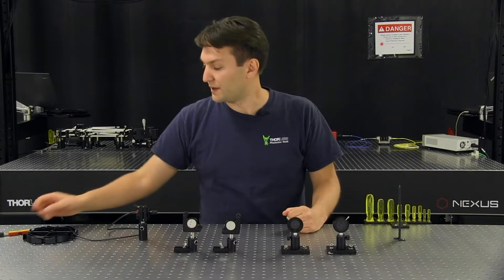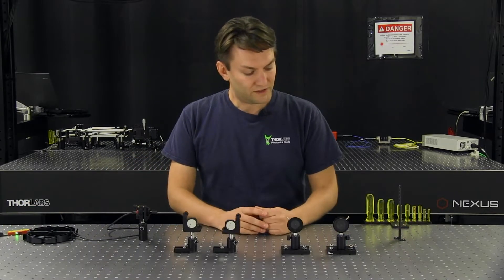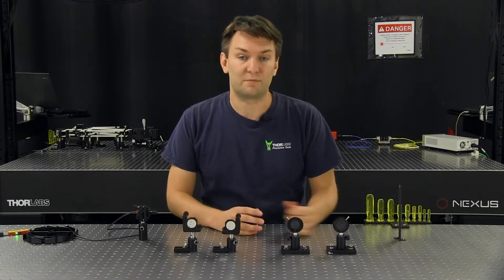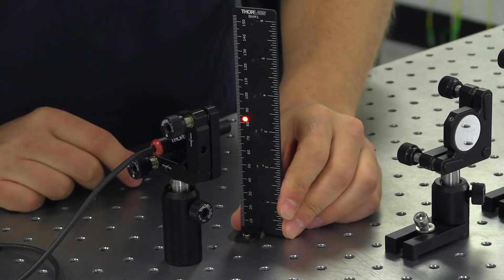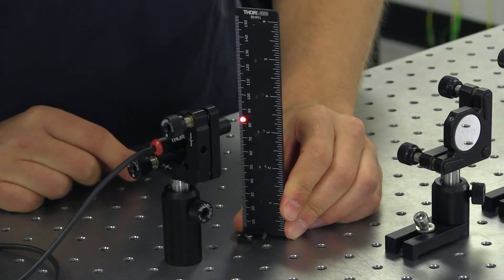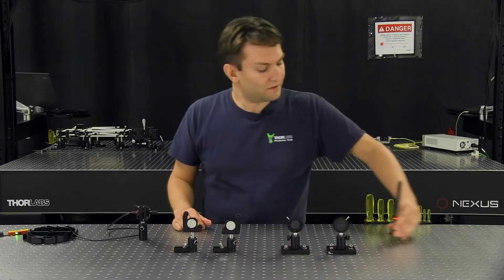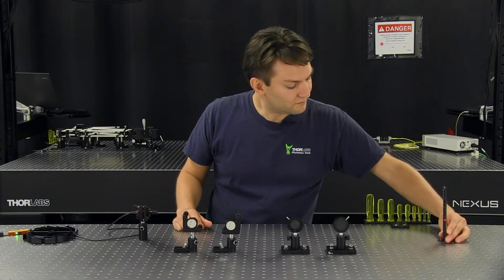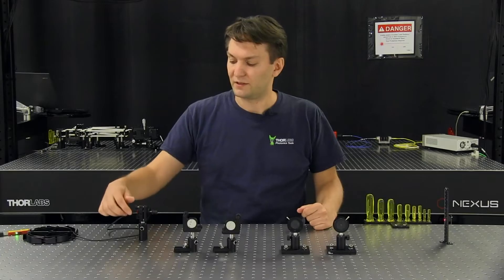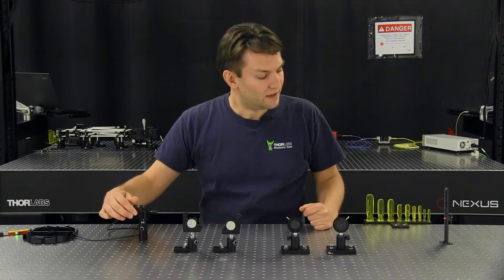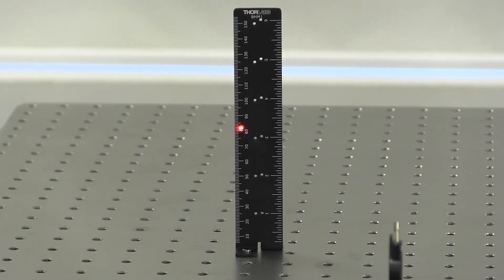So now that it's mounted, I'll turn the laser on. And so the first thing that I'll do is I'll take my ruler and I'll put it directly in front of the laser source. And so here I'll see that the beam is approximately 82 millimeters high. And so I'll take this ruler and I'll send it down the length of the table. And I see that I'm going in a downward direction down to 65 millimeters. So I'll adjust the tip axis and bring the beam up to approximately 82 millimeters.